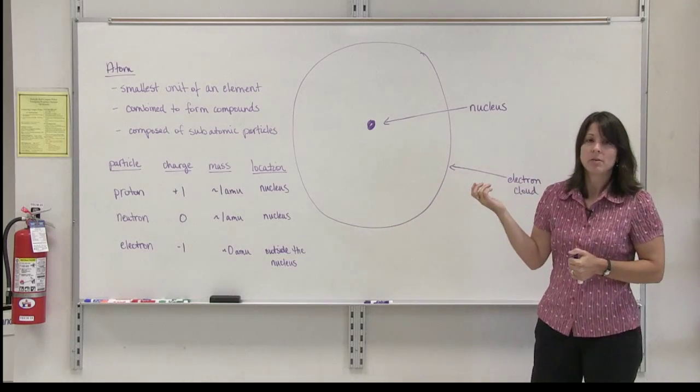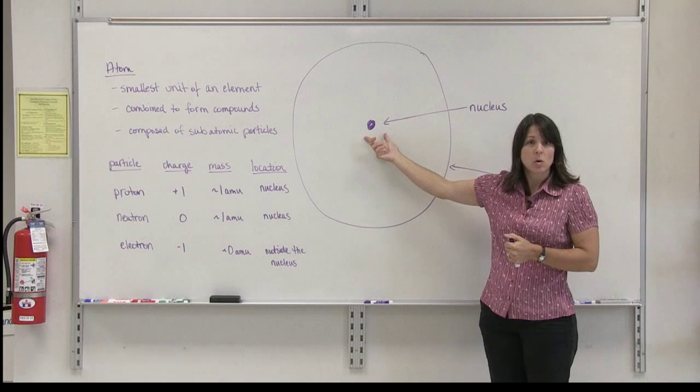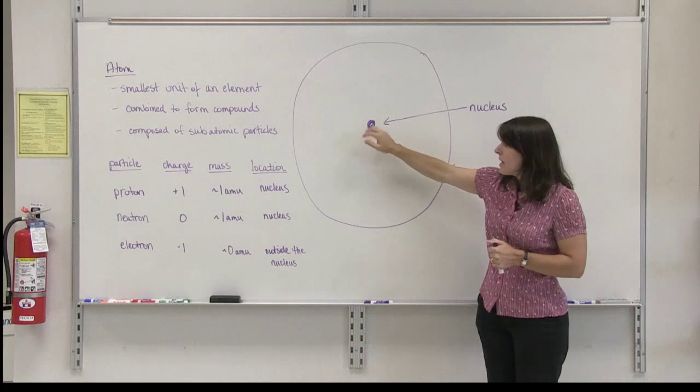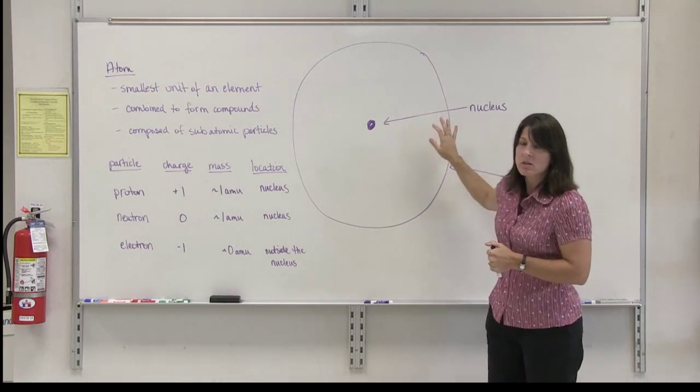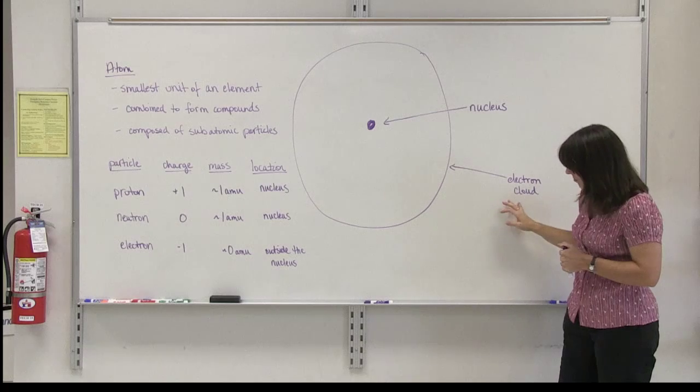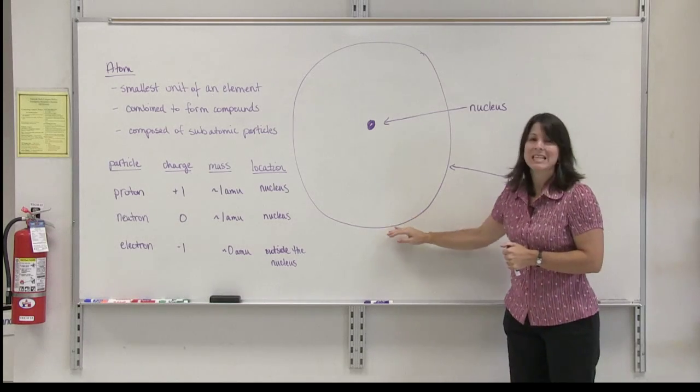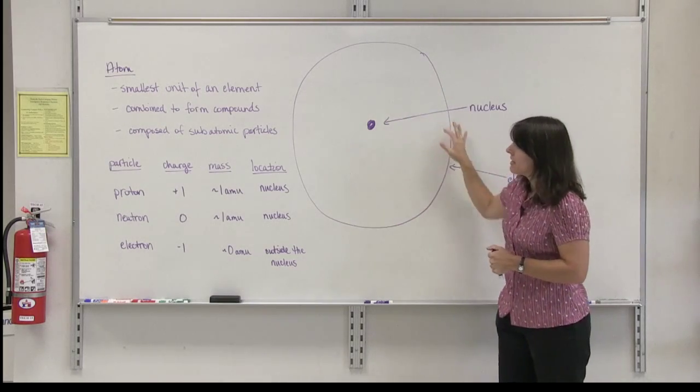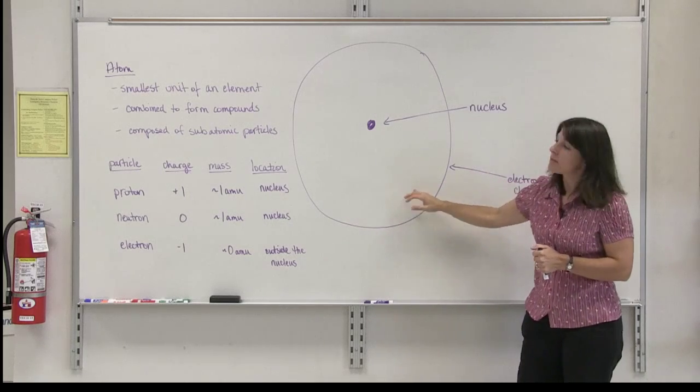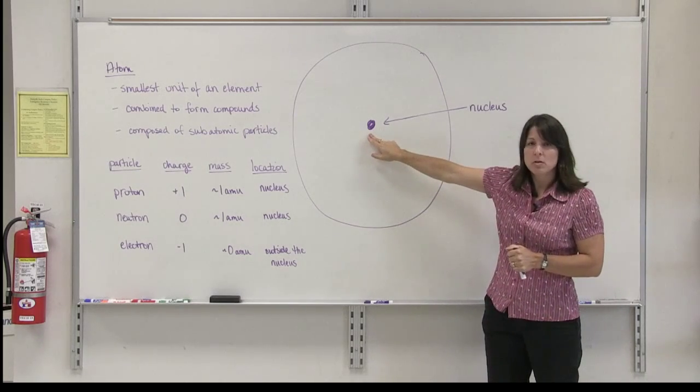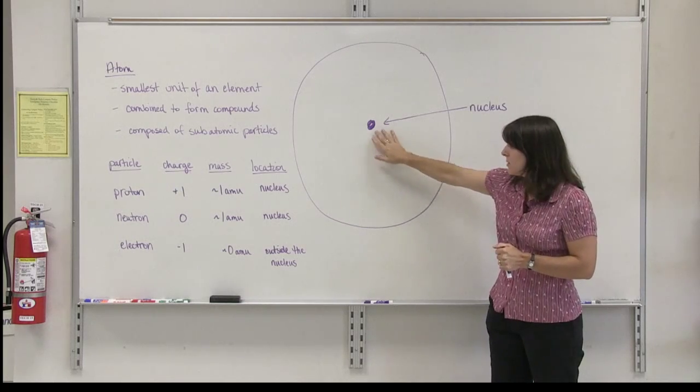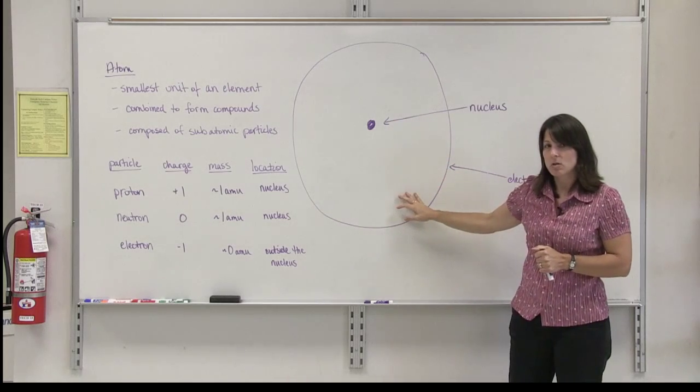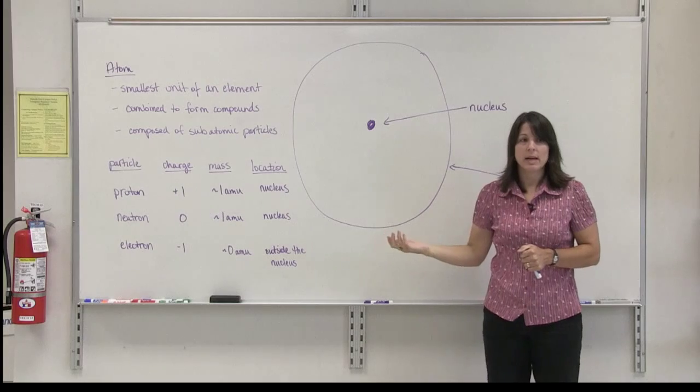And based on this sketch of an atom, the nucleus is the dense core in the center of the atom that contains the protons and the neutrons. The area outside the nucleus is called the electron cloud. The reason it's called a cloud is because there's really not a definitive edge around it. The electrons are moving around the nucleus in this general area. So the positively charged protons and neutral neutrons are in the center in the nucleus. The negatively charged electrons are outside the nucleus in the electron cloud.